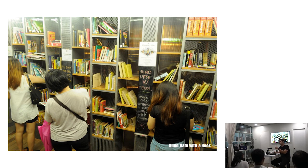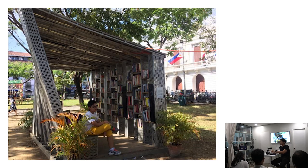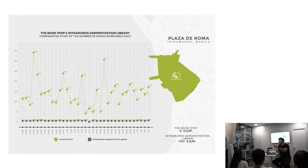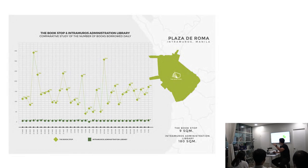The first Bookstop now has a permanent home in front of Manila Cathedral in Plaza Roma, Intramuros. For the research project we needed data, so at every location we found the nearest library and compared their book-borrowing rates. The Intramuros Administration Library averages one to two books borrowed per day, but the Bookstop in Plaza Roma averaged around 70 to 75 books per day.